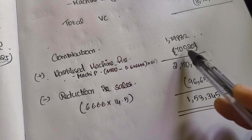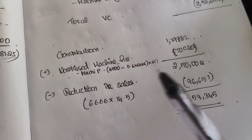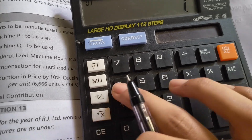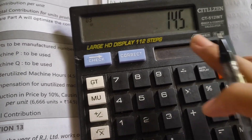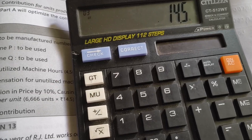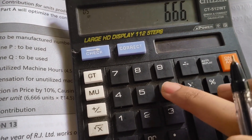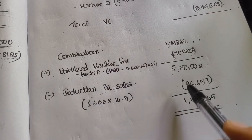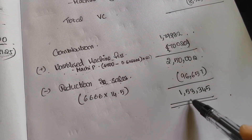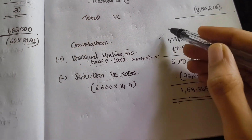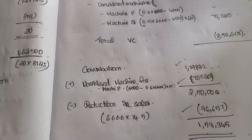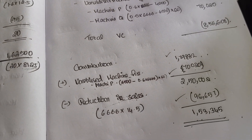Adding the unutilized machine hour income: Rs.1,79,982 + Rs.70,020 = Rs.2,50,002. Now we subtract the reduction in sales. The original selling price was Rs.145, and a 10% reduction is Rs.14.50 per unit. Reduction in total sales = Rs.14.50 × 6,666 units = Rs.96,657. So the new total contribution is Rs.2,50,002 − Rs.96,657 = Rs.1,53,343.